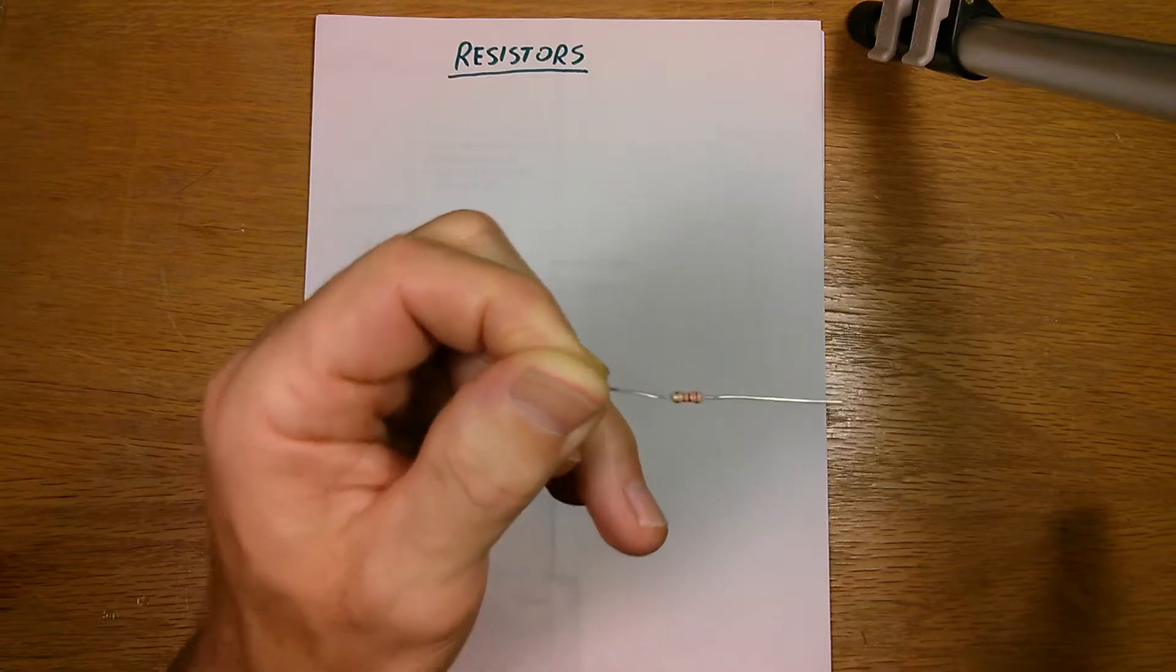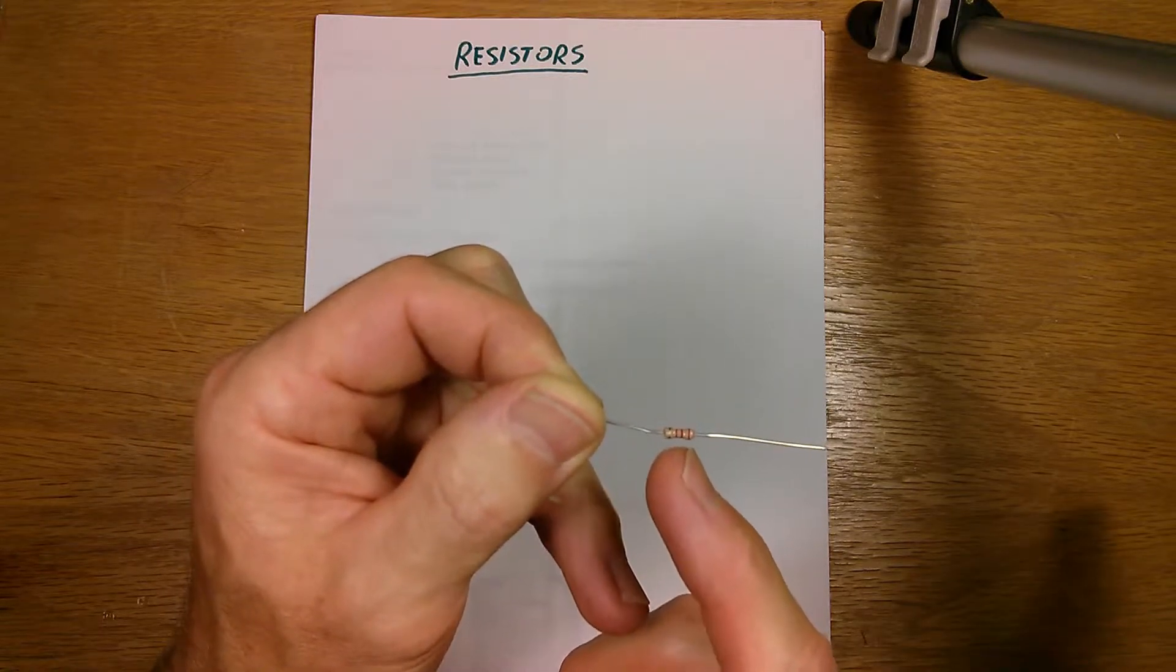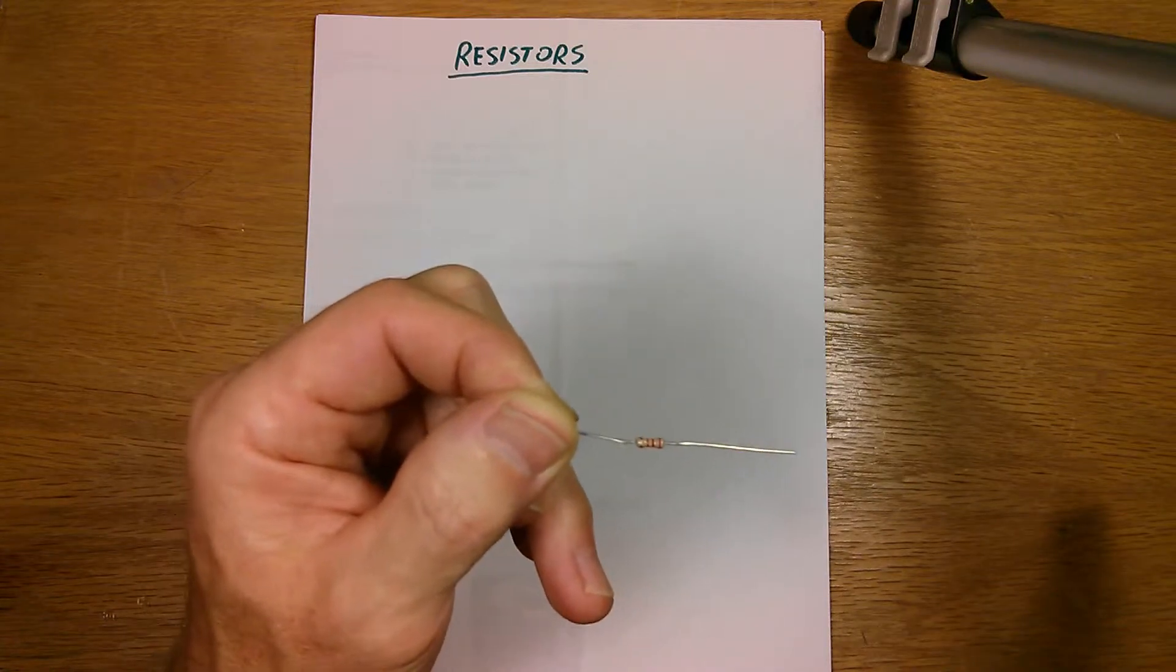That's how you figure out what the value of a resistor is, you look at the color bands. And each different color, there's 10 different colors and each color represents a different number.